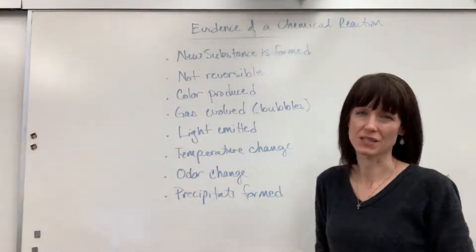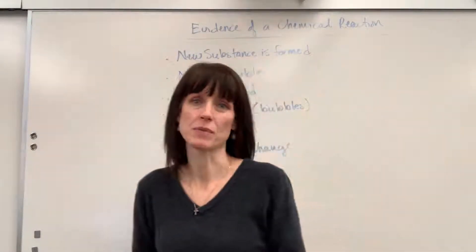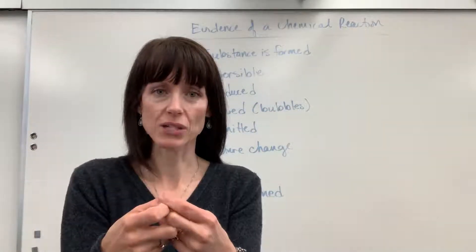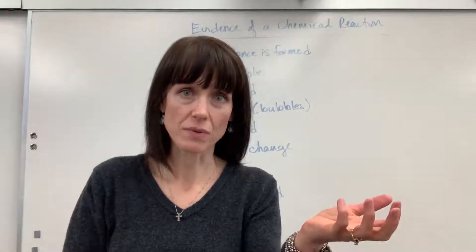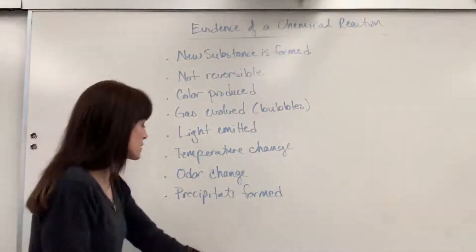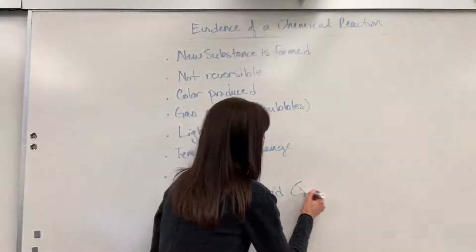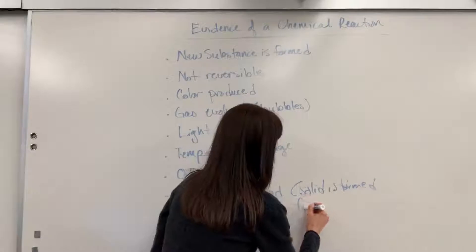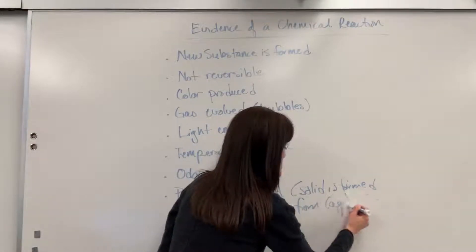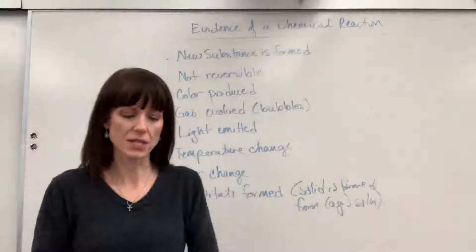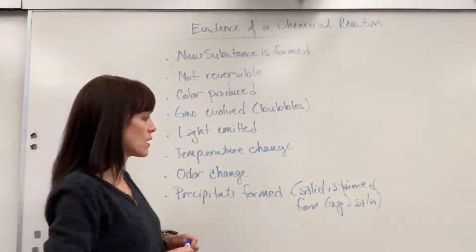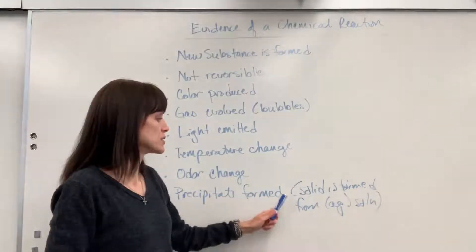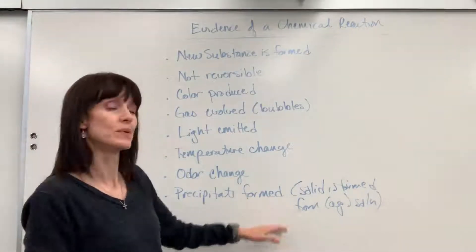And then this is a great one: a precipitate is formed. As a reminder, a precipitate is when you have two aqueous solutions, you mix them together — that's the reaction — and it forms a solid. A precipitate, in parentheses, is a solid formed from aqueous solutions. You can watch the video on net ionic equations and double replacement reactions to see examples of that.